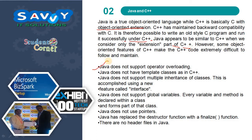Java does not support operator overloading. Note that all the things not supported in Java compared to C are also applicable here, with the following additions. Java does not have template classes as in C++. Java does not support multiple inheritance of classes; this is accomplished using a new feature called interface. Java does not support global variables. Every variable and method is declared within a class and forms part of that class. Java does not use pointers. Java has replaced the destructor function with a finalize function. There are no header files in Java.